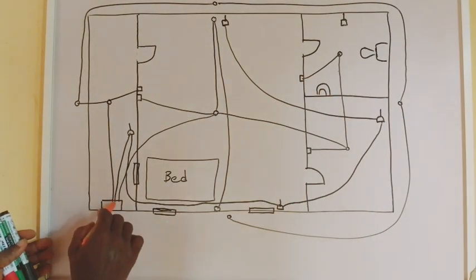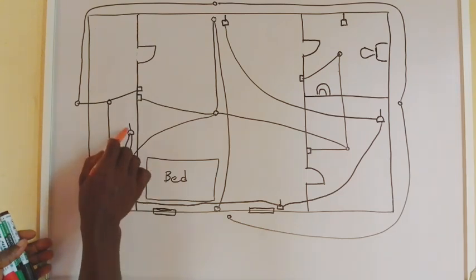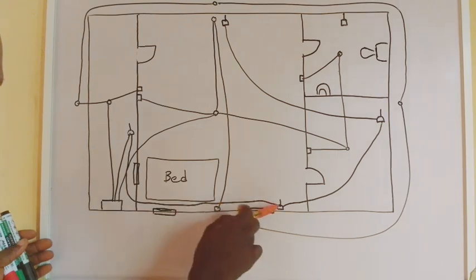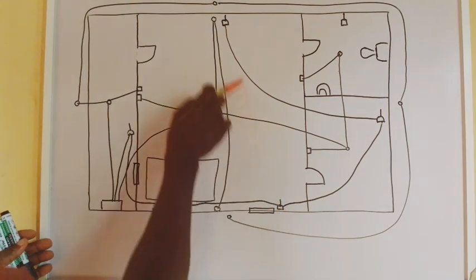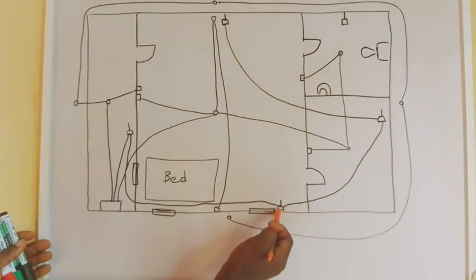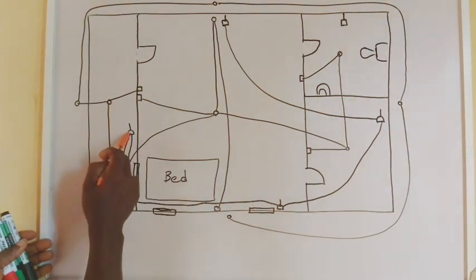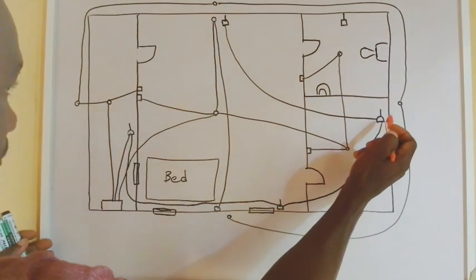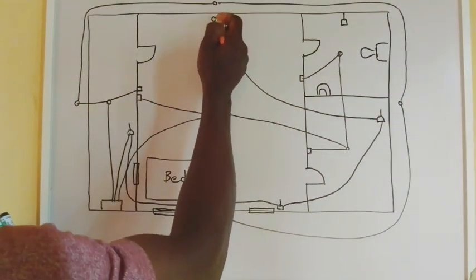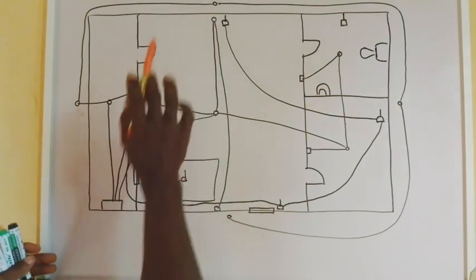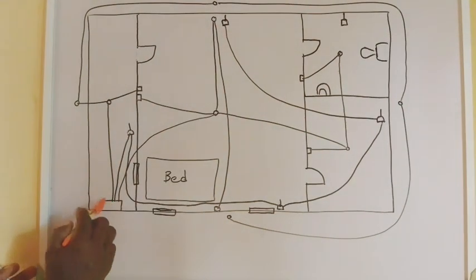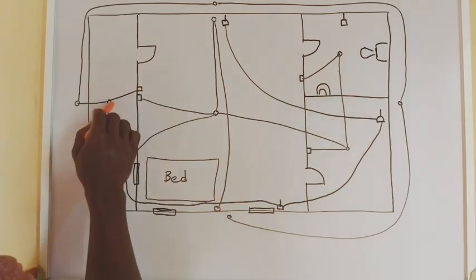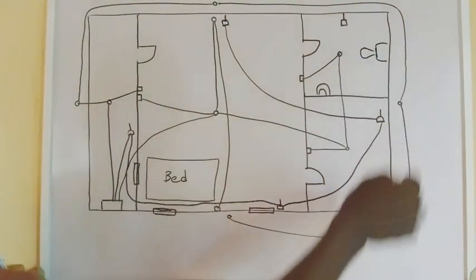So the second circuit ran from here to our first socket. Look at another socket there in the room. We have two circuits here in this room. But this, we located from the sit-out to the first socket, from the first socket to the kitchen socket, from the kitchen socket to this TV socket. And it ends there. So the third circuit ran from here to this sit-out light and from the sit-out light to other security light.